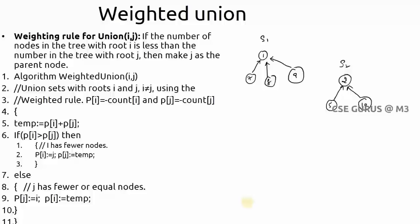In simple union there is confusion about which root node to keep. Weighted union uses the weighting rule: check the number of nodes in each set. Whichever tree has more nodes, its root becomes the root of the result. For our example S1 has 4 nodes and S2 has 3 nodes, so node 1 (root of S1) becomes the root of S1 union S2.